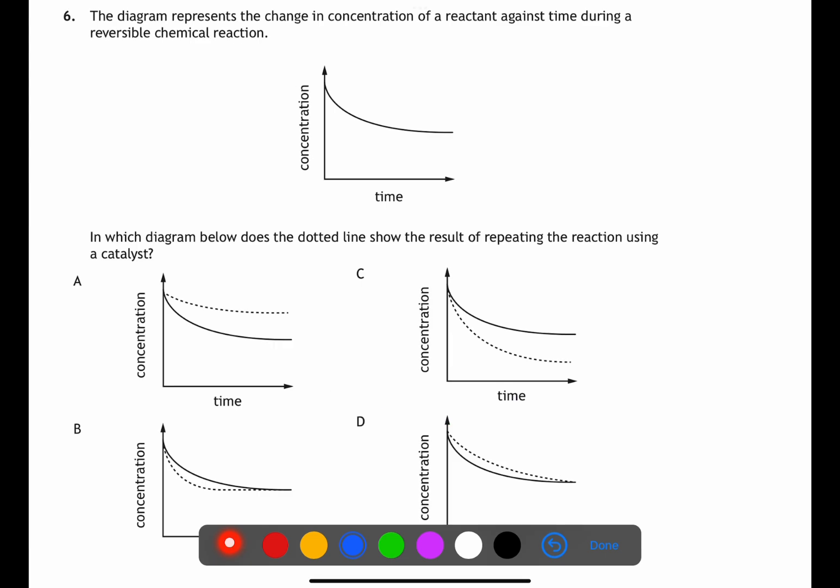For question six we're looking at diagrams of concentrations of reactants against time in reversible reactions. We are to look for a diagram which shows what happens if we add a catalyst. A catalyst will allow the reaction to get to equilibrium quicker however it will not change the overall concentration of the reactant at the end of the reaction. This means that the answer will be B.